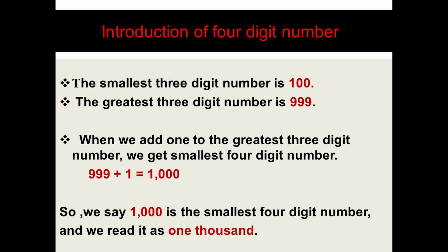So, one thousand is the smallest four digit number. We read and write it as O-N-E T-H-O-U-S-A-N-D — one thousand. Let us now see a few more examples of how four digit numbers are formed on the abacus.